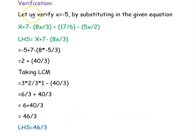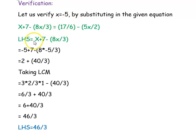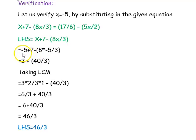Now let us verify our solution by substituting in the left hand side and right hand side separately. The solution we got is x equal to minus 5. We consider only the left hand side, which is x plus 7 minus 8x divided by 3, and substitute minus 5 for x. The expression becomes minus 5 plus 7 minus 8 times minus 5 divided by 3.